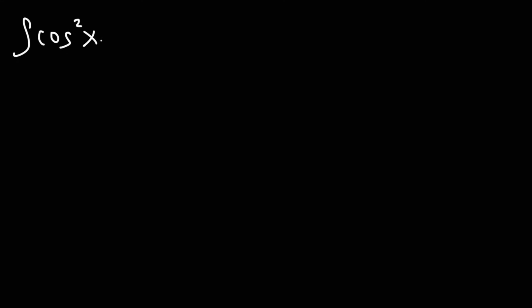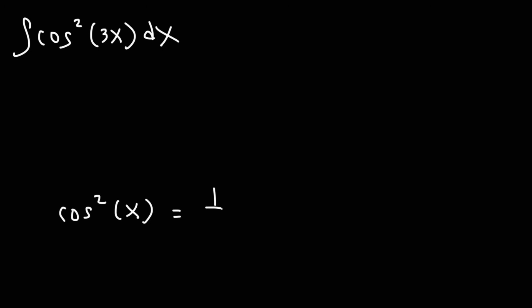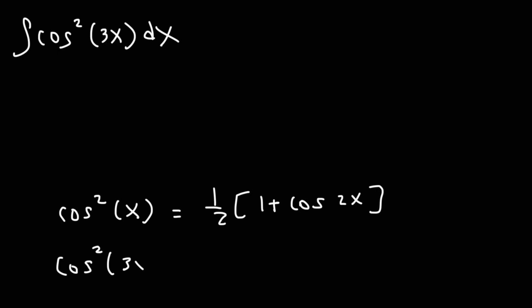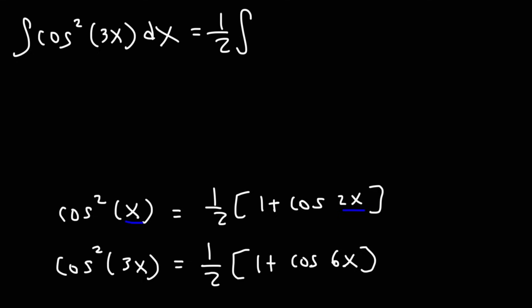Now let's find the antiderivative of cosine squared of 3x. The power reducing formula for cosine squared x is 1/2 times (1 plus cosine 2x). Notice the angle doubles from x to 2x. For cosine squared 3x, the angle doubles from 3x to 6x. So this becomes 1/2 times (1 plus cosine 6x), giving us the integral of 1/2 times (1 plus cosine 6x) dx.